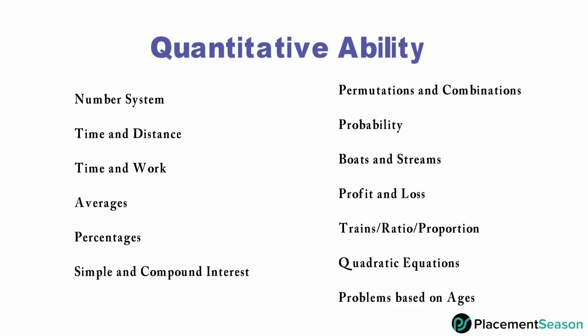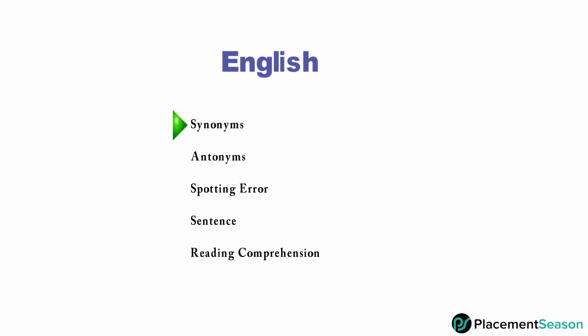Quantitative ability includes questions on number system, permutation and combinations, time and distance, probability, time and work, boats and streams, averages, profit and loss, percentages, trains ratio proportion, simple and compound interest, quadratic equations, and problems based on ages.